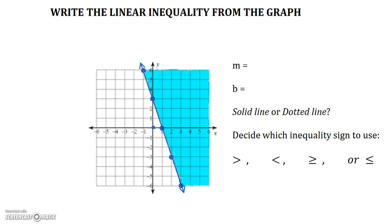So taking this first example, we have a few things that we should identify: the slope, the y-intercept, the type of line, and the inequality sign. From that, we'll be able to find our linear inequality. Let's get started.